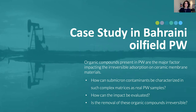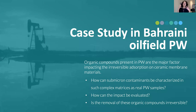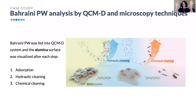Moving on to objective four — the case study application — we applied all the methods we developed to Bahraini produced water. Our hypothesis was that the organic compounds present in produced water are the major factor impacting reversible adsorption. We were wondering: how can submicron contaminants be characterized in this complex composition of produced water, how can we evaluate the impact, and how easy is it to remove these organic compounds?